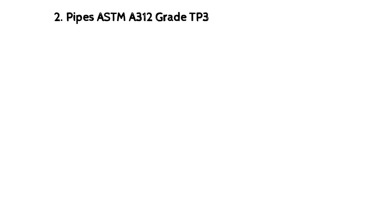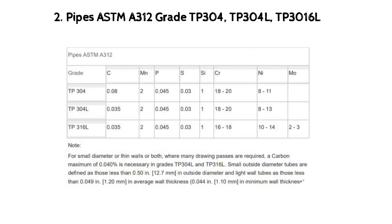Table 2: Pipes — ASTM A312, Grades TP304, TP304L, TP316L. Note: for small diameter or thin walls, or both, where many drawing passes are required, a carbon maximum of 0.040 is applied as necessary in Grades TP304L and TP316L. Small outside diameter tubes are defined as those less than 0.50 in (12.7 mm) in outside diameter, and light wall tubes as those less than 0.049 in (1.20 mm) in average wall thickness, or 0.044 in (1.10 mm) in minimum wall thickness.